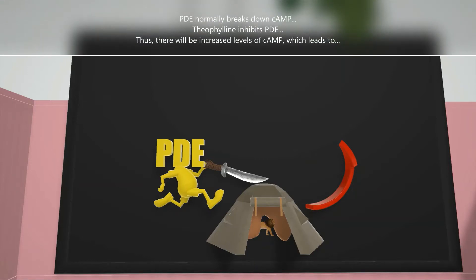But in this theater screen, PDE is being exploded. That's exactly what Theophylline does. It inhibits the action of phosphodiesterase.